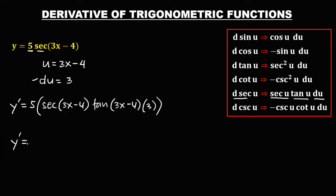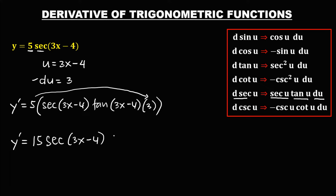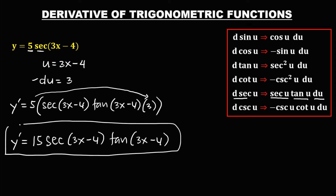We need to simplify the constant, so multiply 5 times 3. We need to write the constant first, so 5 times 3 is 15. Then we have 15·sec(3x minus 4) times tangent(3x minus 4). This is now the derivative.